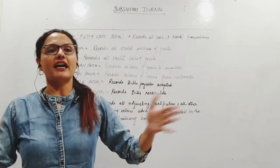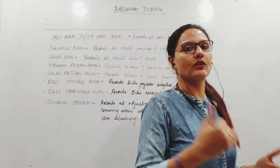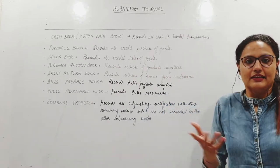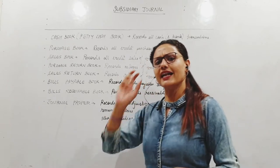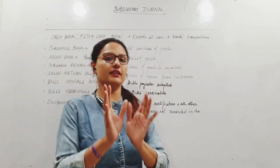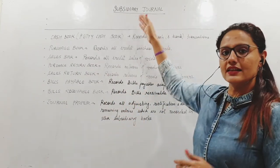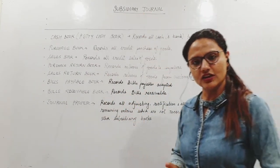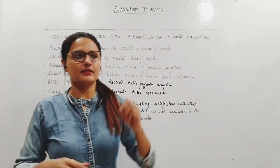To simplify that, we have divided the journal into various specialized books which are called subsidiary books of journal. So each book will deal with a different type, a typical type of transactions only. This is basically to simplify the journal, to reduce its voluminous bulkiness by not recording everything in one place.